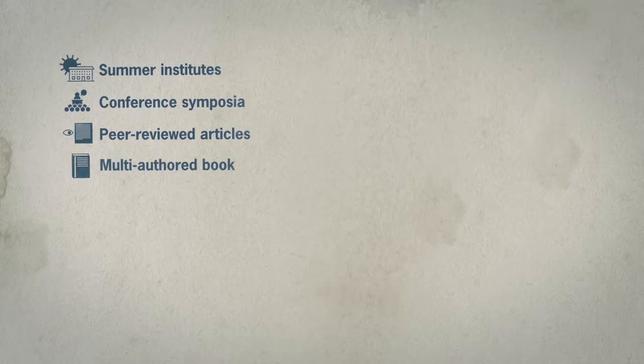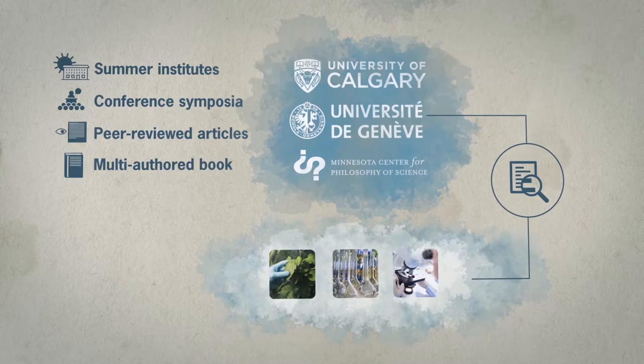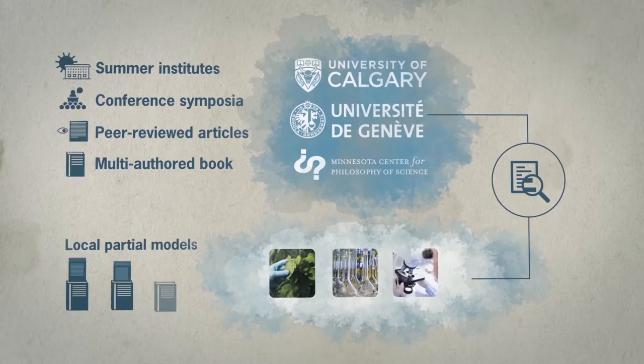Through summer institutes, conference symposia, peer-reviewed articles, and a multi-authored book, the project team, located at the universities of Calgary, Geneva, and Minnesota, will analyze stable practices in biological sciences, which do not rest upon integrated comprehensive theories, but instead support local, partial models of complex phenomena.